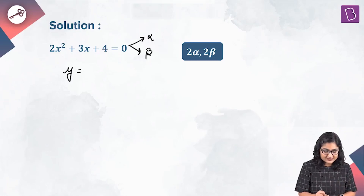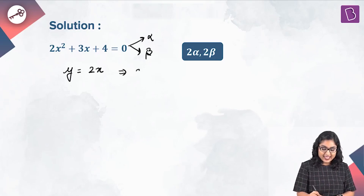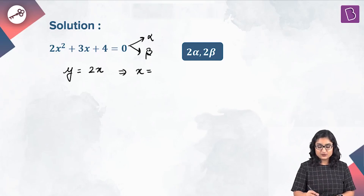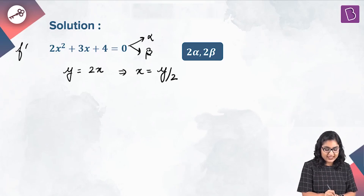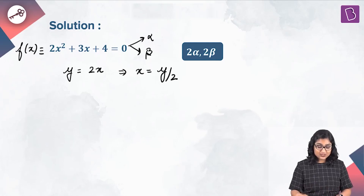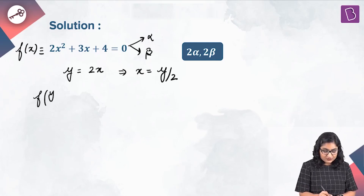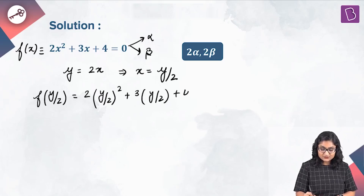If we assume y is equal to 2x, we will calculate x in terms of y, which will be equal to y by 2. So we are going to replace x with y by 2 in f of x, defined by 2x squared plus 3x plus 4. So f of y by 2 equals 2 times (y by 2) whole squared plus 3 times y by 2 plus 4, and this is equal to 0.